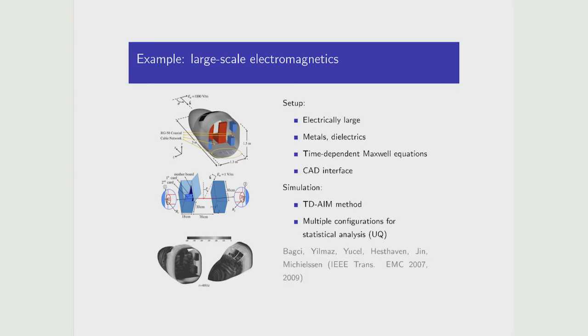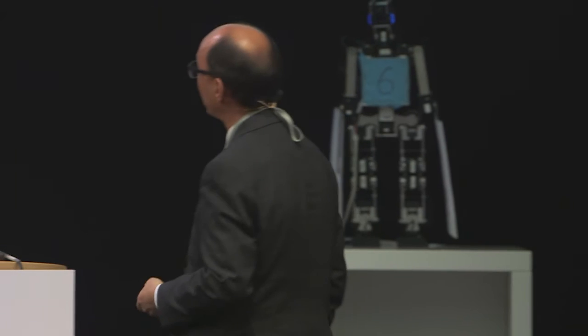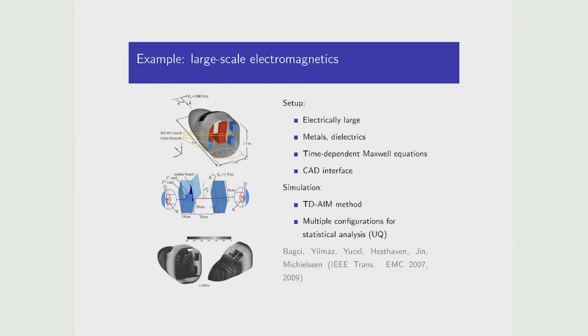Another example is electromagnetic interaction with structure — this is a cockpit in an airplane. You see the pilot seats and a computer box behind the co-pilot. In that box there's a motherboard. The question is: if an electromagnetic wave hits that airplane, can you study the excitation induced on the motherboard sitting inside that computer? So it's a very multi-scale problem.